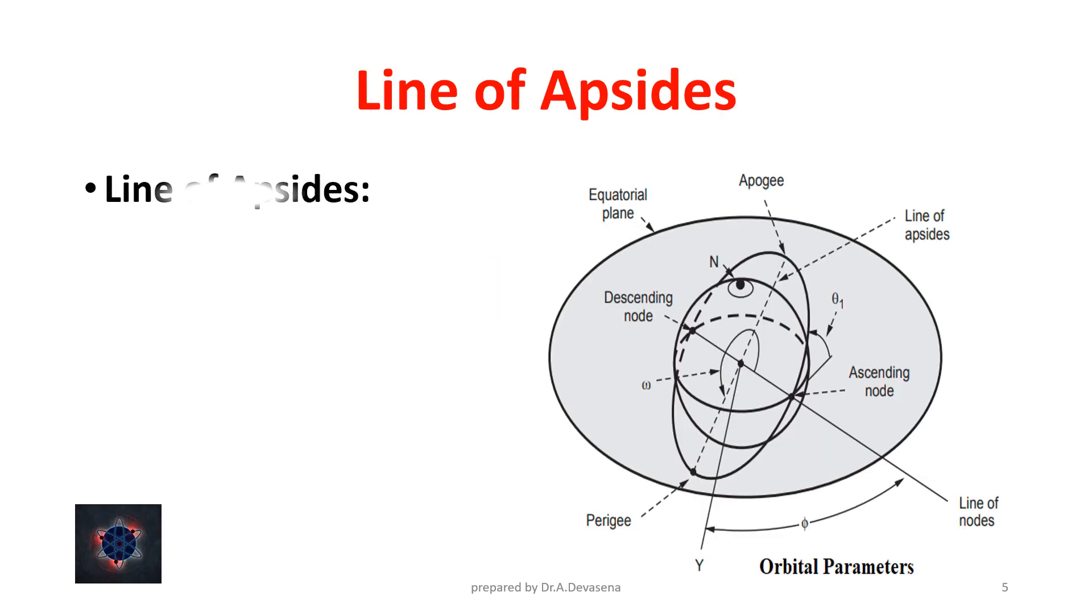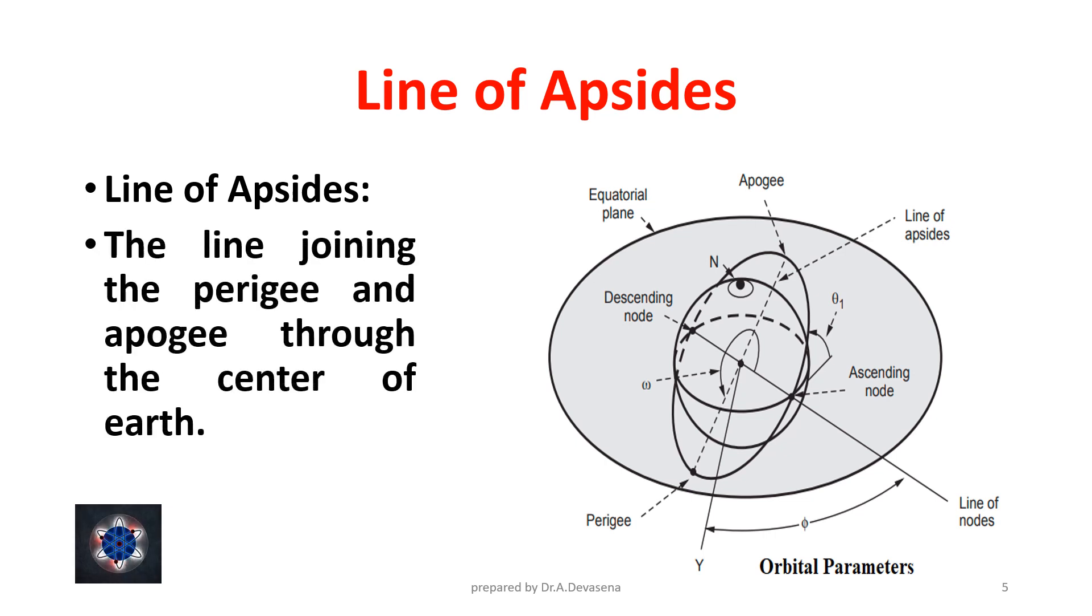Line of Apsides. The line joining the Perigee and Apogee through the center of Earth is called the Line of Apsides. The Line of Apsides is indicated here.